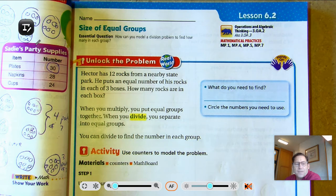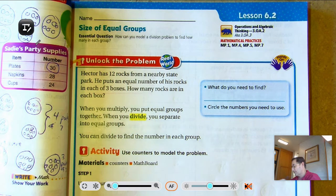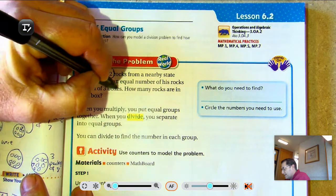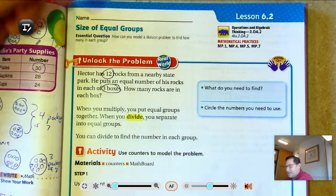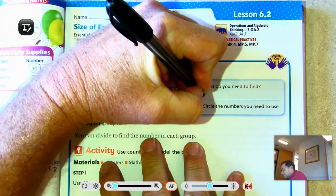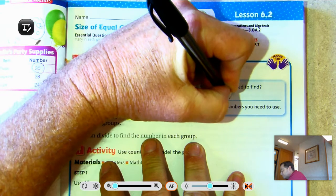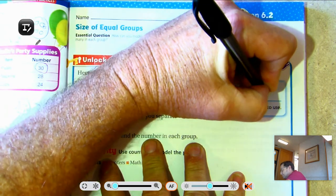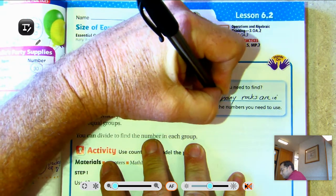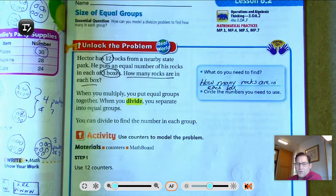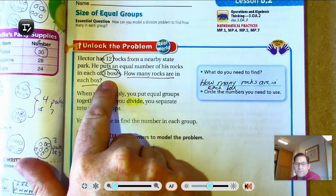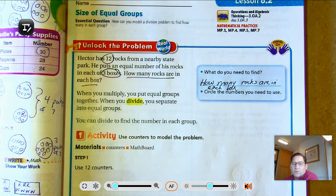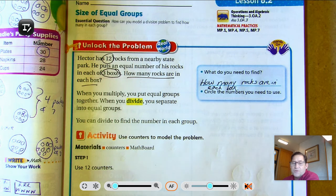Unlock the problem. Hector has 12 rocks from a nearby state park. He puts an equal number of his rocks in each of three boxes. How many rocks are in each box? So we know he has 12 rocks total. He's going to share those with three boxes. What do we need to find? We need to find how many rocks are in each box. Circle the numbers you need to use. We need to use 12 rocks and the three boxes. When you multiply, you put equal groups together. When you divide, you separate into equal groups. And we can divide to find the number in each group.